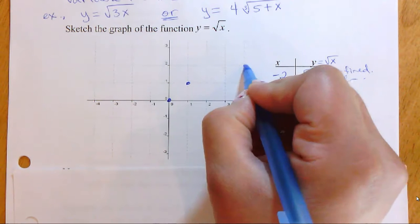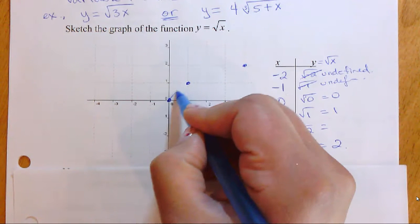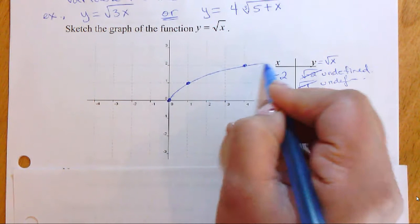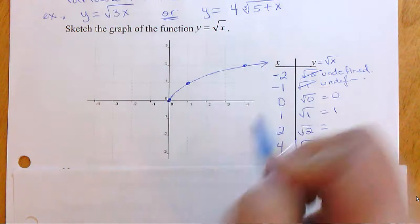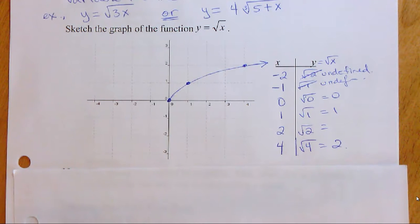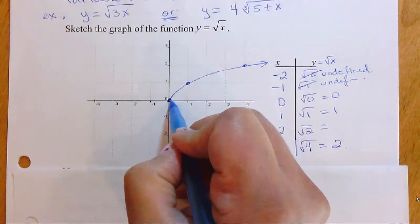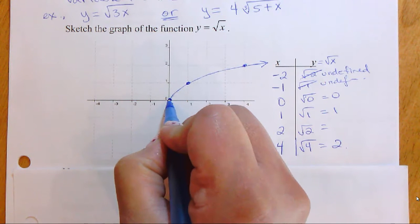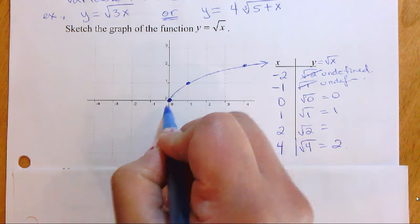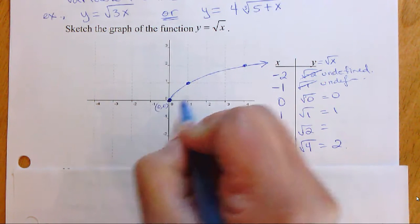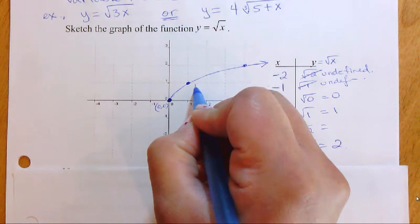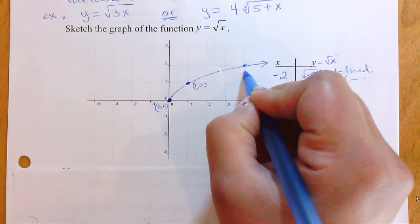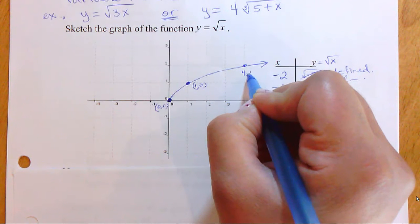Let's quickly plot those points on the graph. This parent function is what we are going to be transforming. You want a nice curved line with an arrowhead at the end. Our graph starts at zero, zero. The first nice point is one comma one, and the next nice point is four comma two.